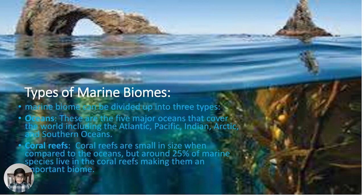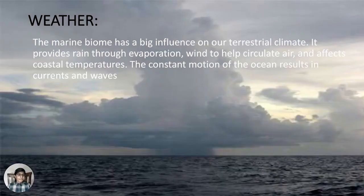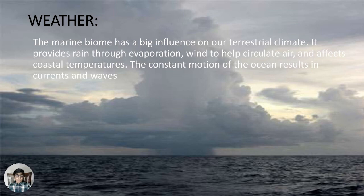Coral reefs: Coral reefs are small in size compared to the oceans, but around 25 percent of marine species live in coral reefs, making them a very important biome. The marine biome has a large influence on terrestrial climate — it provides rain through evaporation, helps circulate wind, and affects coastal temperatures. The constant motion of the oceans results in currents and waves.